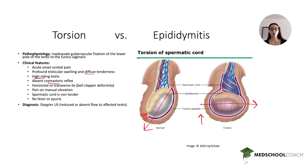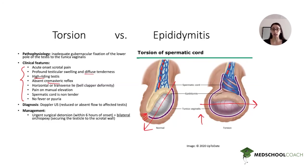Even if ultrasound is not available or doesn't confirm the finding, if you have the classic story and exam findings with high clinical suspicion for testicular torsion, you still proceed with management because this is a surgical emergency. After about six to eight hours, you start to have irreversible ischemia, so you want an urgent surgical detorsion ideally within six hours of pain onset. This is paired with a bilateral orchiopexy — securing the testicle to the scrotal wall.